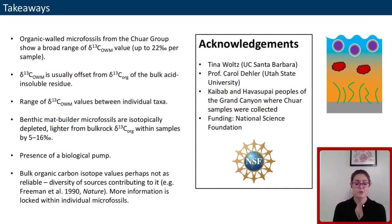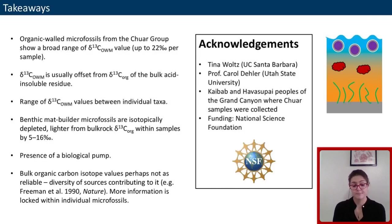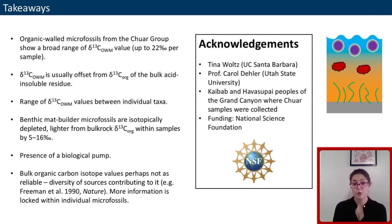Some of the main points from these preliminary results are that microfossils show a broad range of isotopic values usually quite offset from the bulk acid-insoluble organic carbon, and individual species have different value ranges. This is both exciting and a bit worrying, because it suggests we shouldn't trust the bulk carbon isotope value too much — it's just showing an average of a given water column. This has been suspected for some time; classic papers have discussed how isotopic records of bulk organic matter can be difficult to interpret.